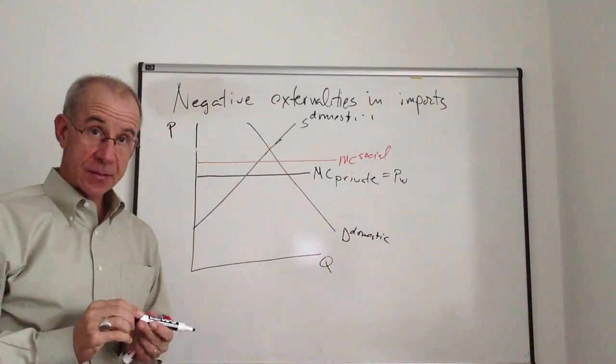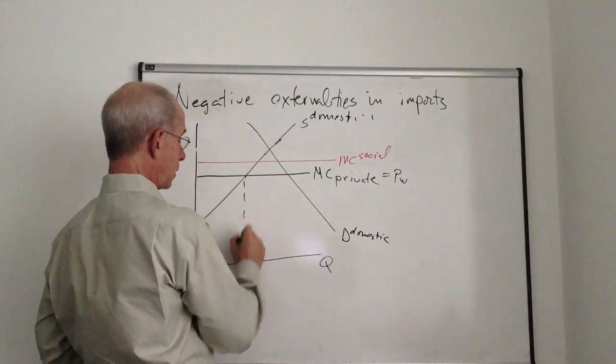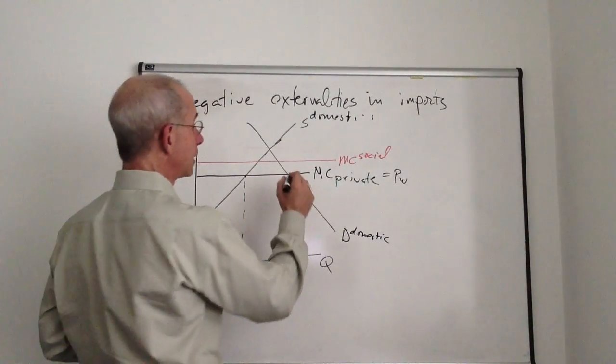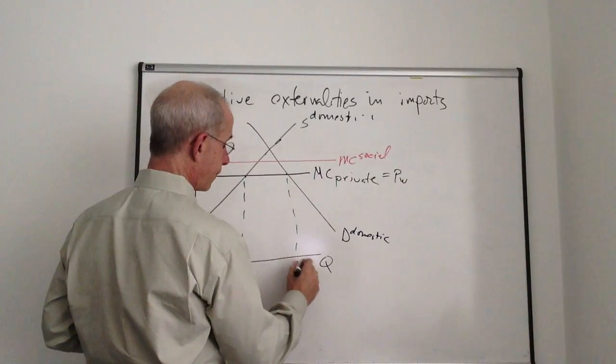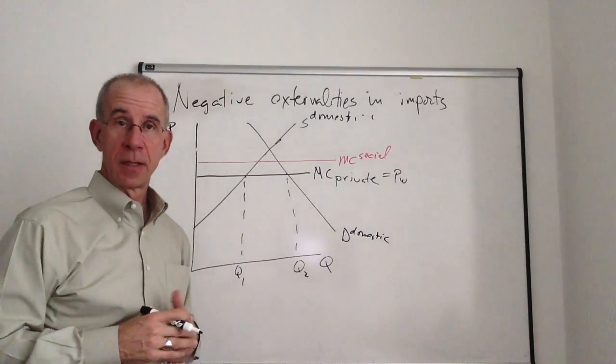So the private citizens are going to make the decisions based on private cost. Q1 is going to be produced domestically. Q3 is the amount that's going to be consumed domestically.